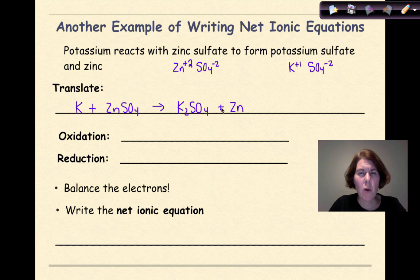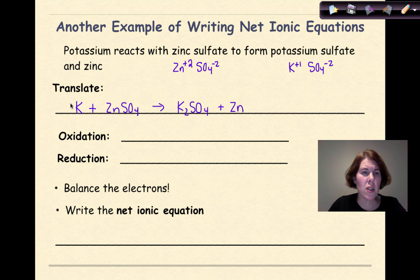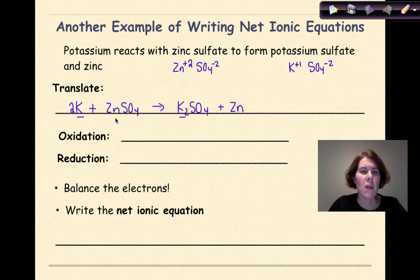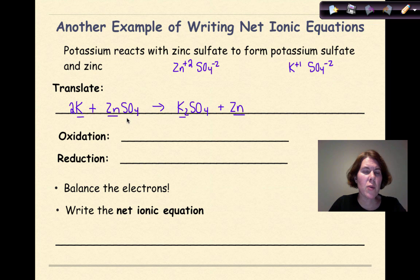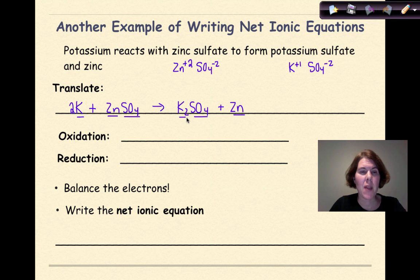The next thing I want to do is balance this. I look and say: 1 K on the left, 2 K on the right — so I'm going to put a 2 in front of K on the reactant side. K is balanced. Zn: 1 Zn on each side, balanced. Sulfate: 1 SO₄ polyatomic on each side, balanced.